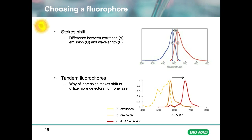We can see the excitation max and emission max values for fluorescein on this slide. The difference between these two values is called the Stokes shift, and it is this property that gives fluorophores their use in flow cytometry.